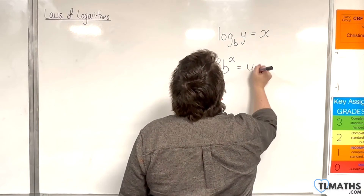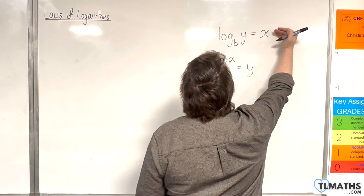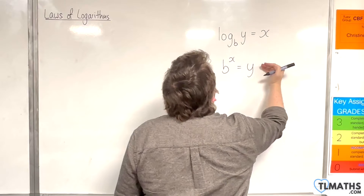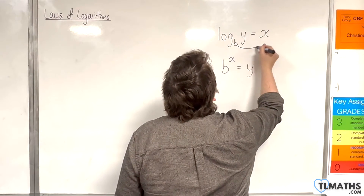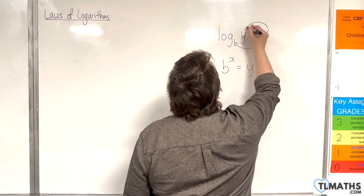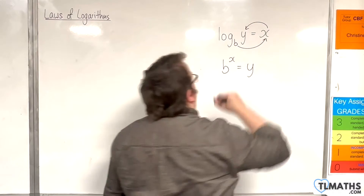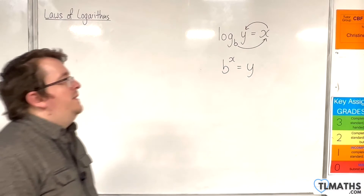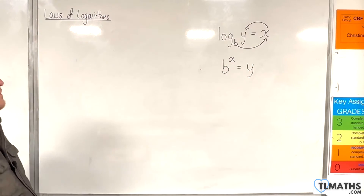So this is the logarithmic form, and this is the exponential form — b to the power of x is equal to y. So we read it that way round.